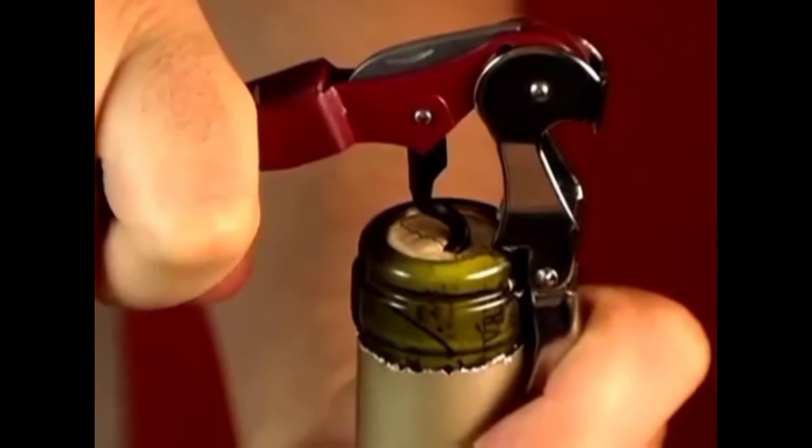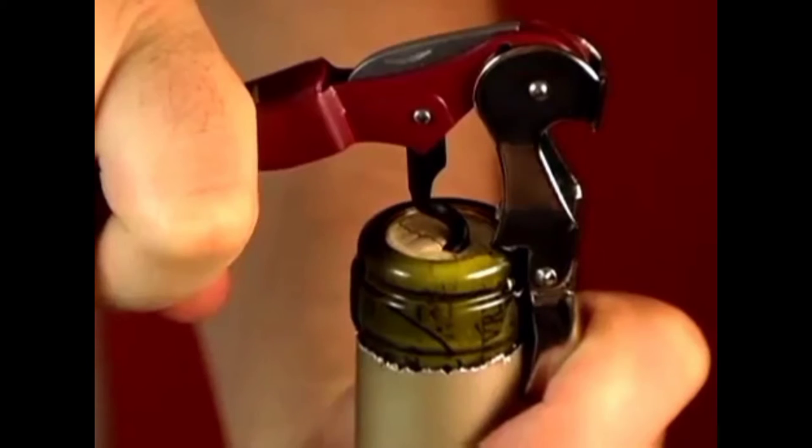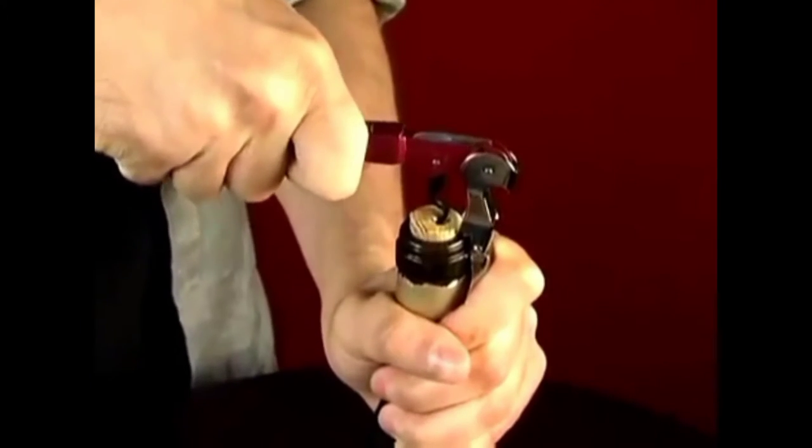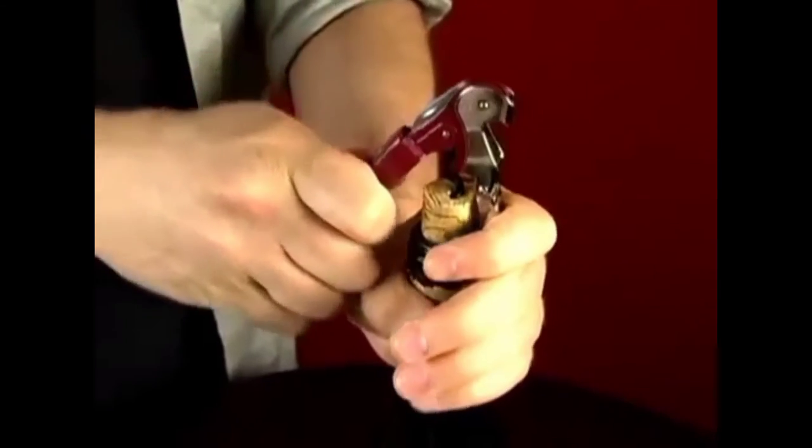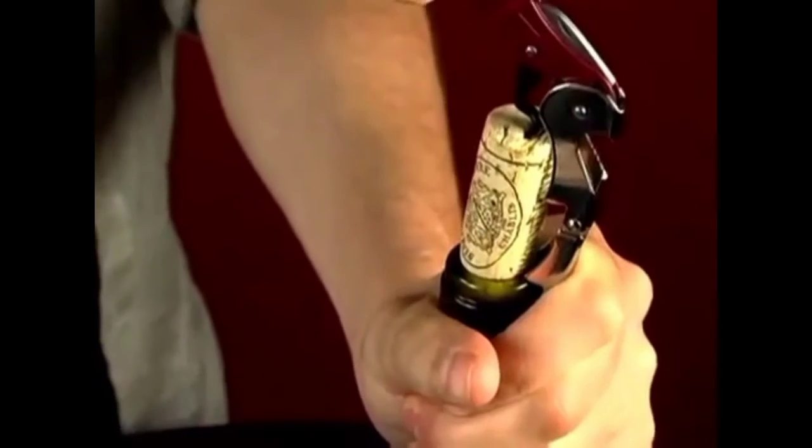Rest the lever's first notch on the lip and hold the lever flat against the bottle so it doesn't slide. Gently but firmly lift the end of the wine key using lever action to get the cork moving. Then, use the notch at the end of the lever to ease the cork out of the bottle.